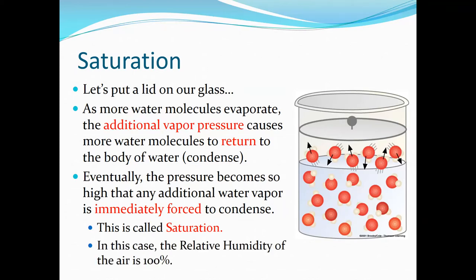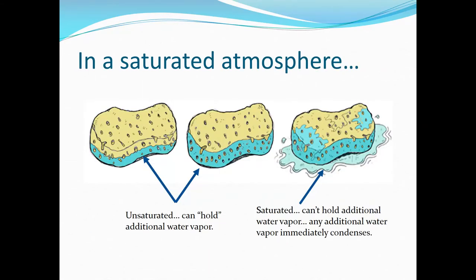In this case, we say the relative humidity of the air is 100%, meaning it has 100% of the water vapor it can hold. Think of it like a sponge: when unsaturated, you can soak more water into it. But once saturated, it can't hold any more — any additional water you put in comes right back out. That's what happens in a saturated atmosphere.